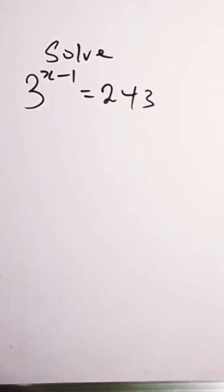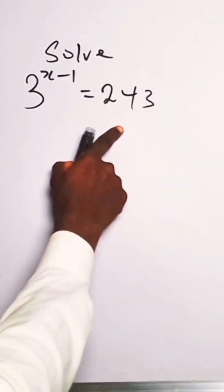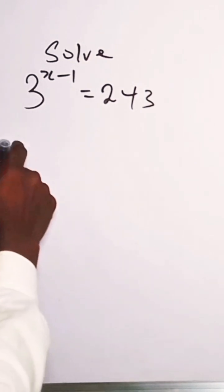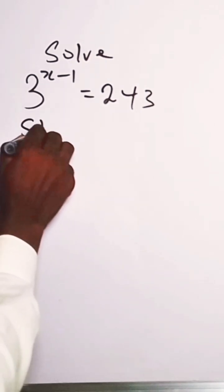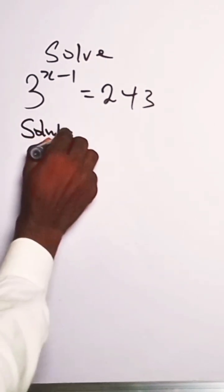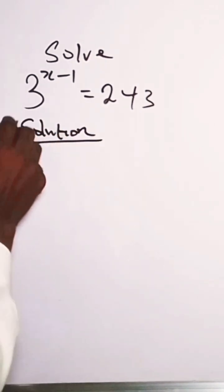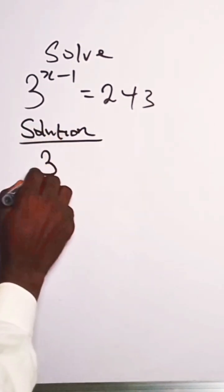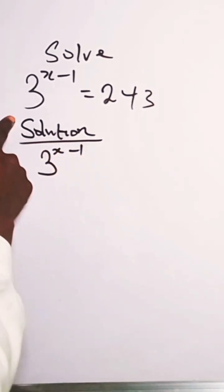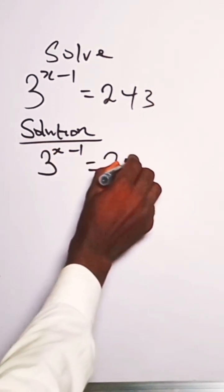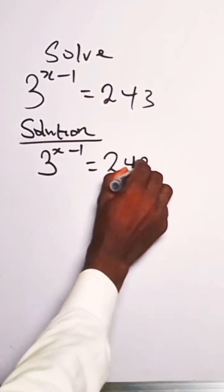The question says solve this exponential equation. We have 3 raised to the power x minus 1 equals 243. How do we do this? For 3 raised to the power x minus 1 equals 243, we can express 243 in index form.